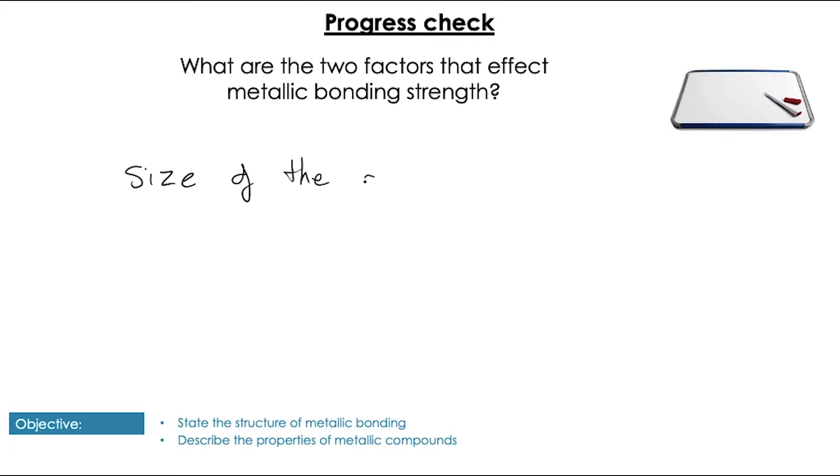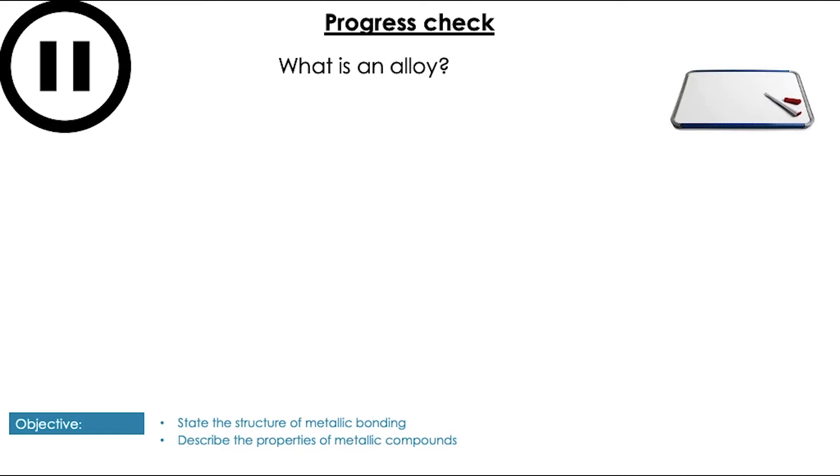Pop them up! Okay, hopefully we remembered that we need the size of the atom, and, of course, the number of valence electrons that are given up to that delocalized electron cloud. Next question, what is an alloy? Pause the video to have a go at that.